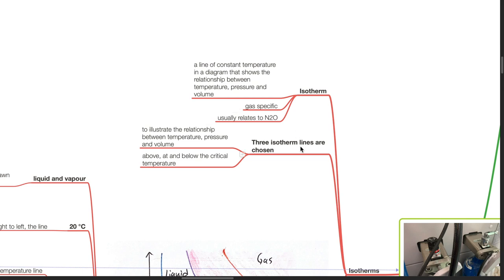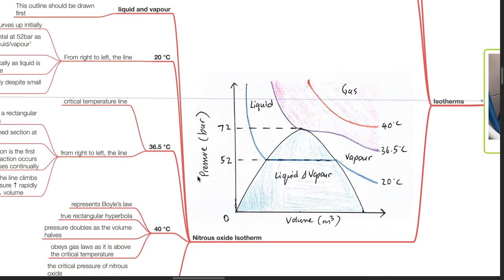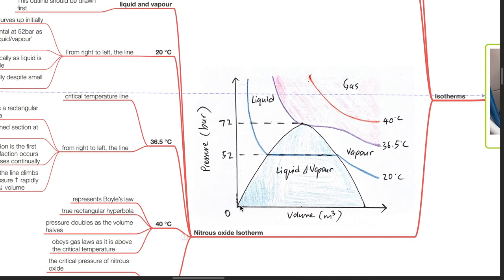Three isotherm lines are chosen to illustrate the relationship between temperature, pressure and volume above, at and below the critical temperature. This is the nitrous oxide isotherm, with the x-axis showing volume and the y-axis showing pressure in bar.